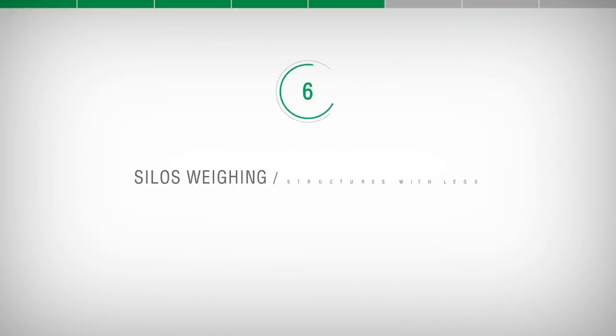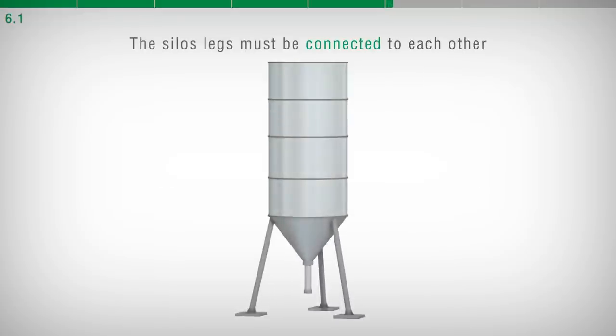Silos weighing: Structures with legs. If the weighing system is applied to structures with legs or silos, it is always necessary to check that the supports are connected to each other, if not connect them properly.